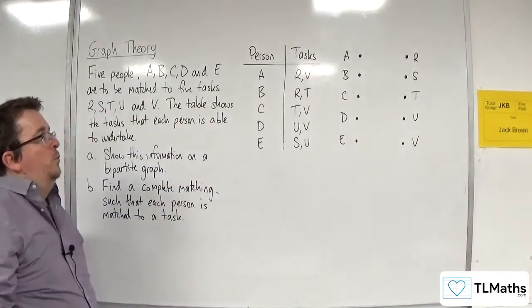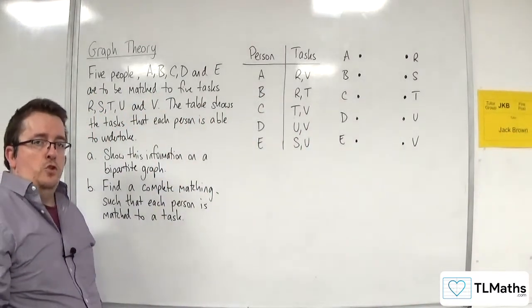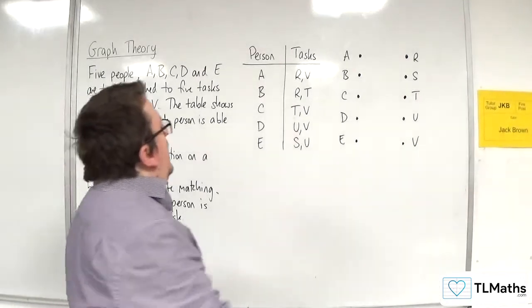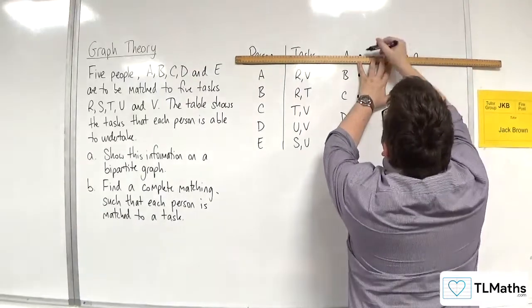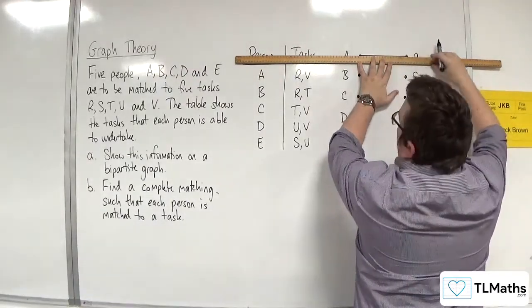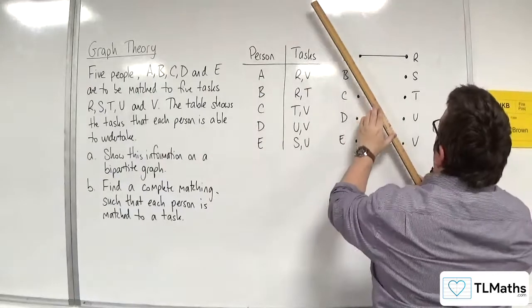And then we're just going to do dot to dot and join these up. So A can do R and V. I would definitely use a ruler to do this.